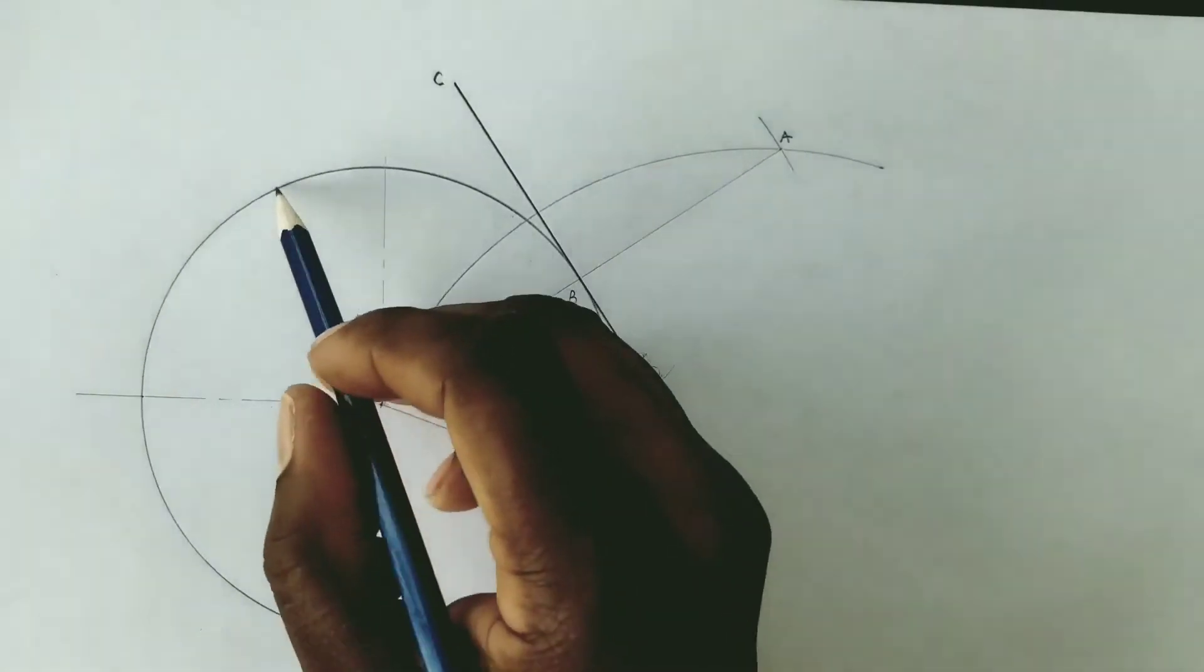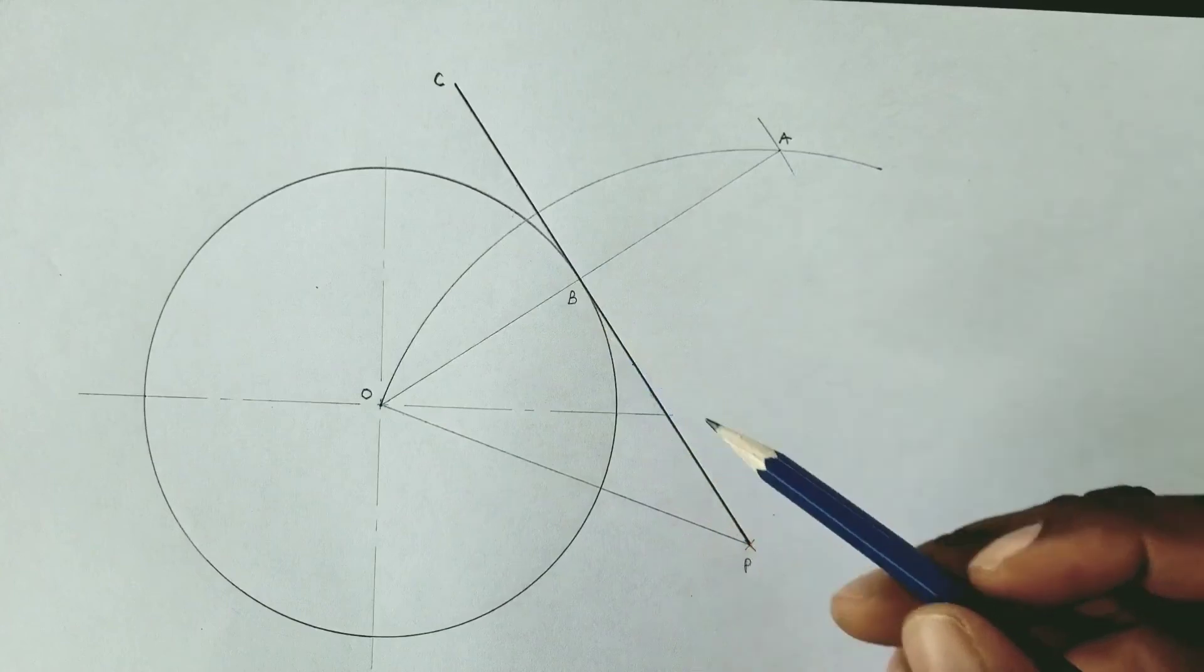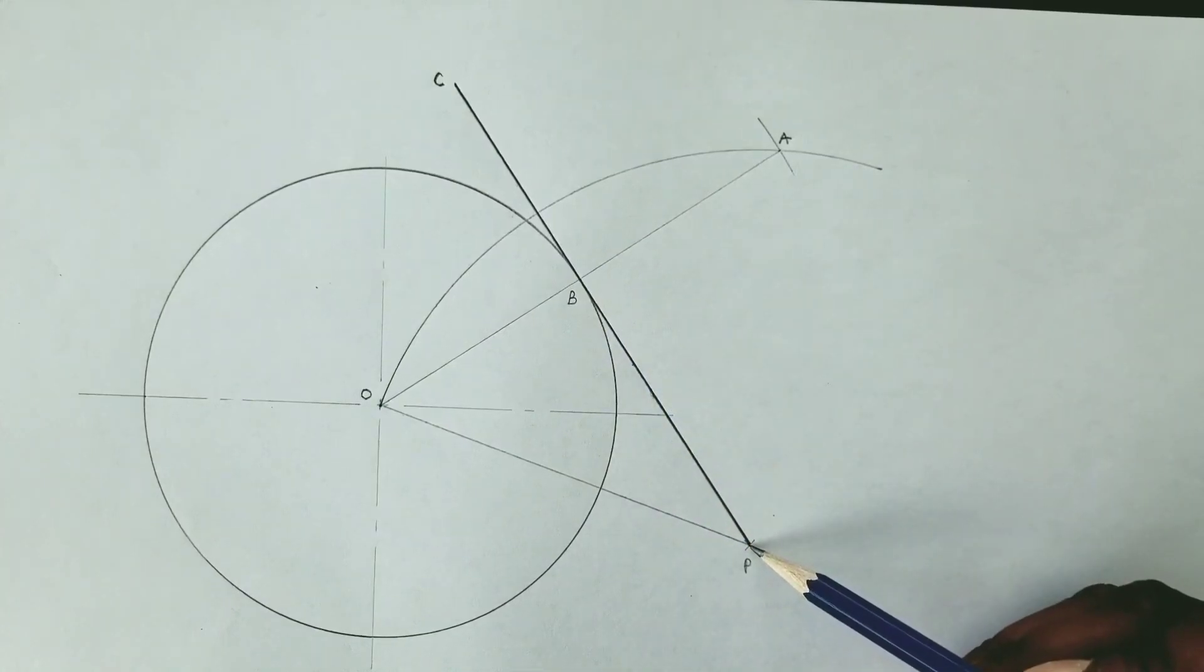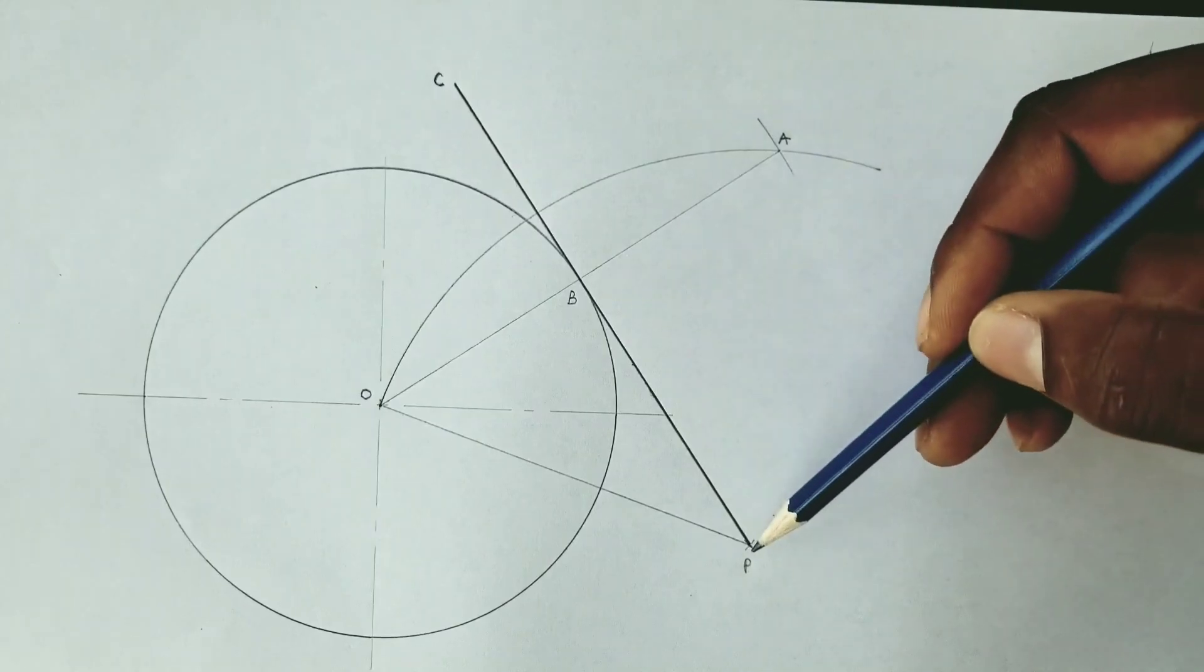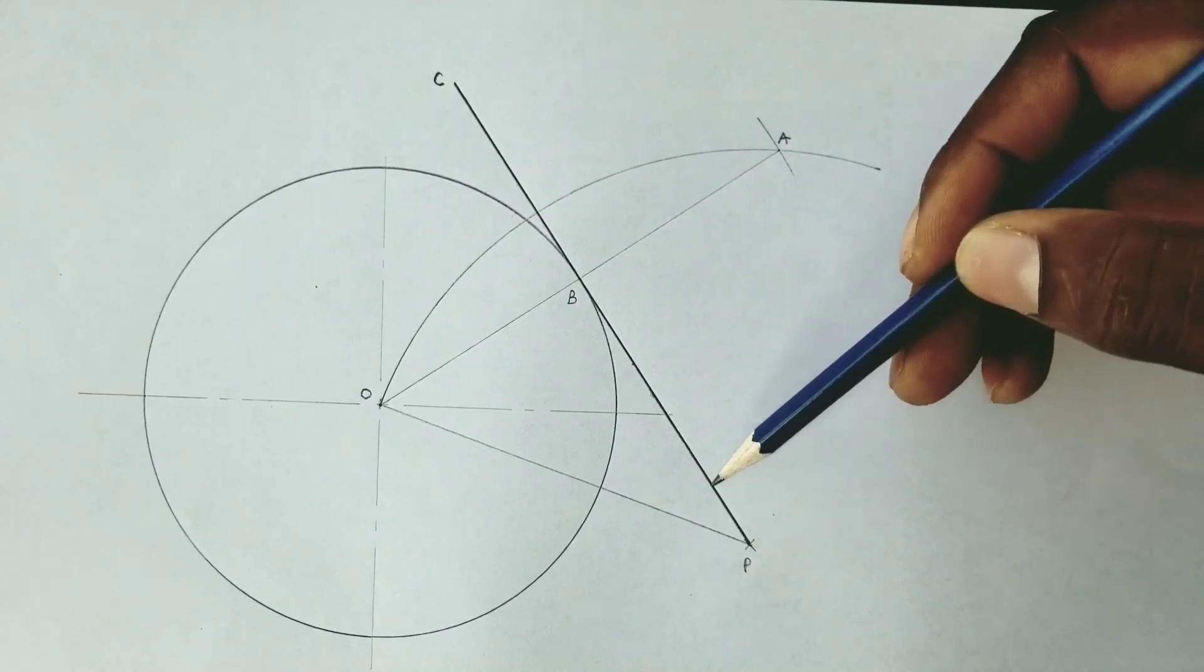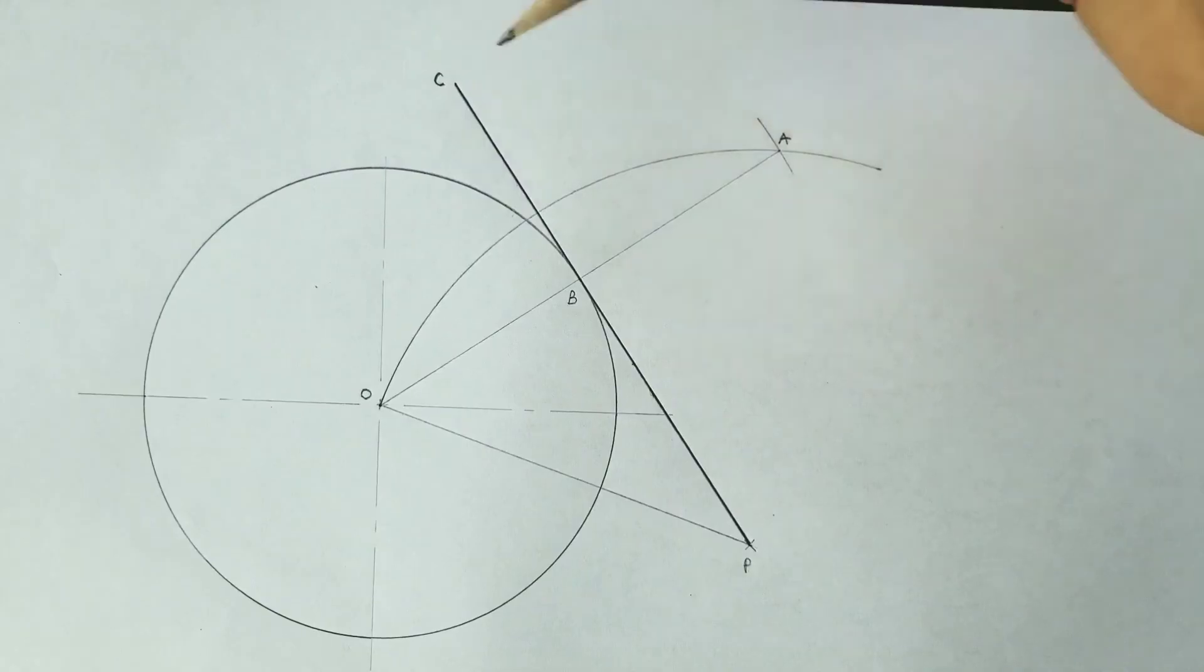To the circle we had, we added a point outside of the circle and we drew our tangent from P to touch the circle at point B and extend it to point C.